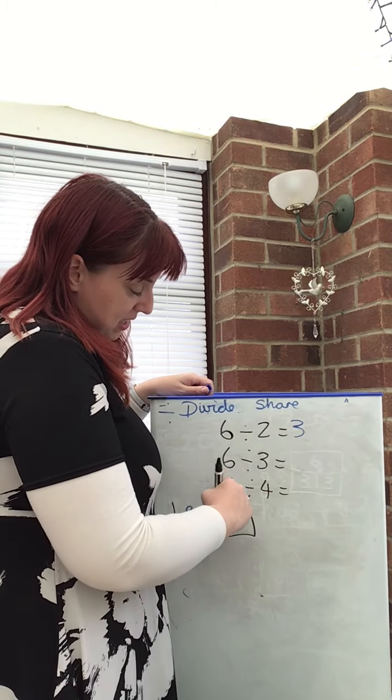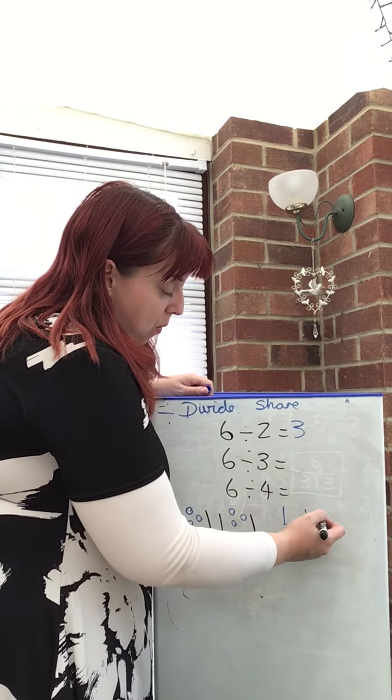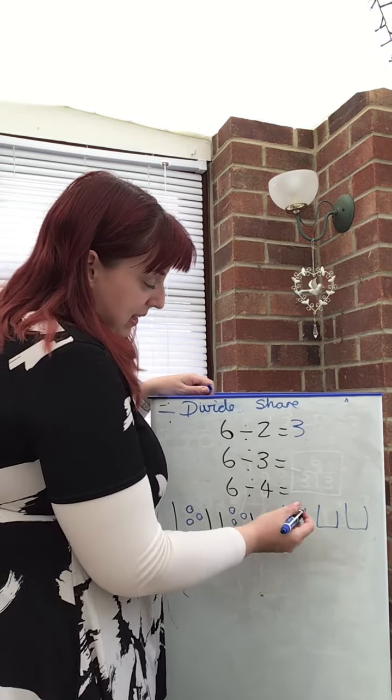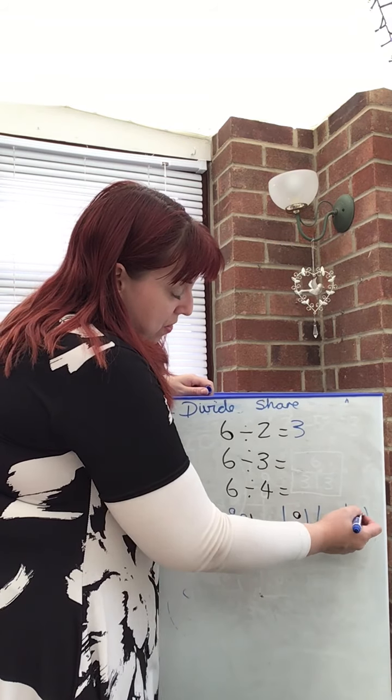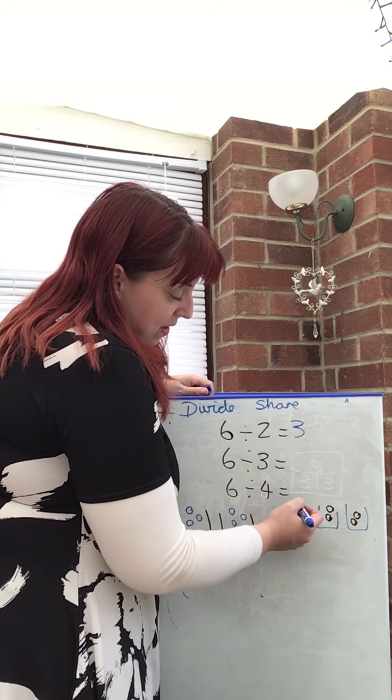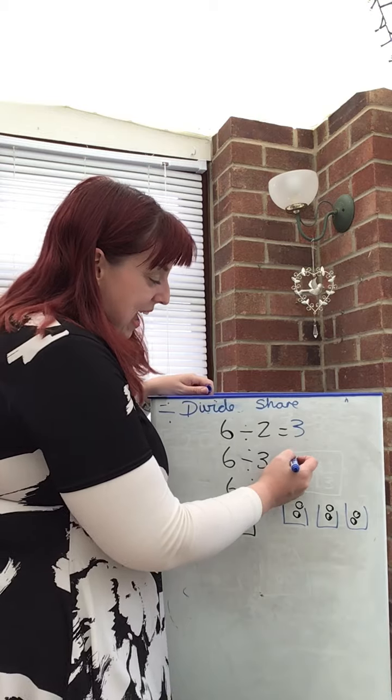This time, six sweets share between three. One, two, three. Let's see. One, two, three, four, five, six. Yes, I can. Equal groups.